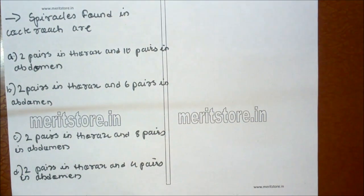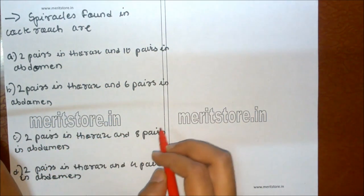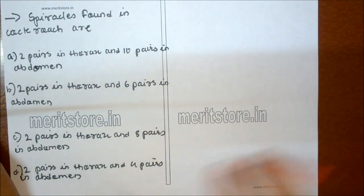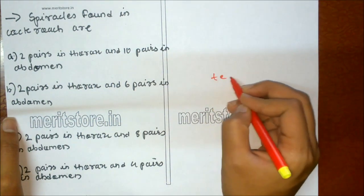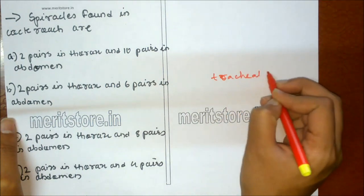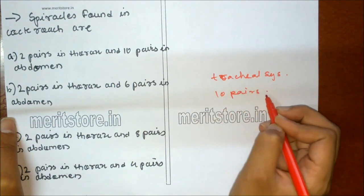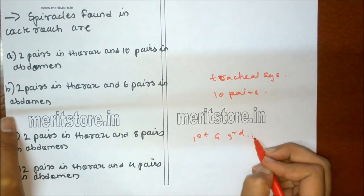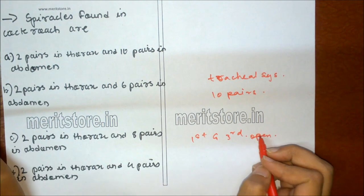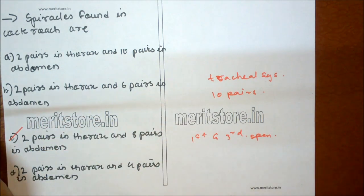Spiracles found in cockroach are: A 2 pairs in thorax and 10 pairs in abdomen, B 2 pairs in thorax and 6 pairs in abdomen, C 2 pairs in thorax and 8 pairs in abdomen, D 2 pairs in thorax and 4 pairs in abdomen. In cockroach, the tracheal system opens outside by 10 pairs of spiracles. The first and third pairs remain open all the time. So there are 10 pairs in total. Option C is the correct answer.